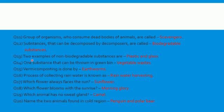Question 12: substances that can be decomposed by decomposers are called biodegradable substances. Question 13: two examples of non-biodegradable substances are plastic and glass. There are many more examples, so you can give your own as well. Question 14: one substance that can be thrown in the green bin — I have written vegetable waste, but you should know that all biodegradable waste can be thrown in the green bin.